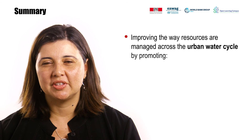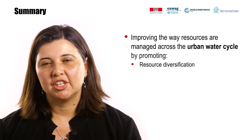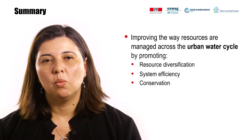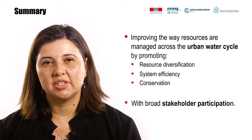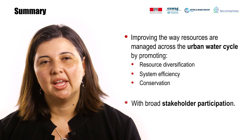To summarize, in this module we have seen that integrated urban water management is about improving the way water resources and related services are managed across the urban water cycle by promoting resource diversification, system efficiency and conservation, while taking into consideration all water users in the city and in the wider catchment through broad stakeholder participation. IUWM offers a holistic approach to strategic planning and implementation, which considers the management of competing water uses and urban service provision in the city in the context of the watershed, while recognizing the water needs of the city as well as those of upstream and downstream users.